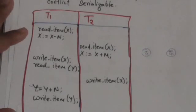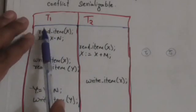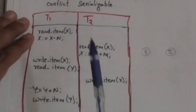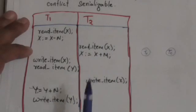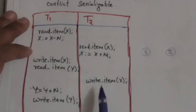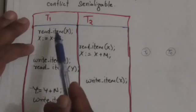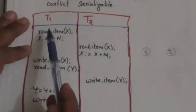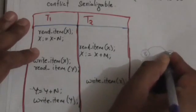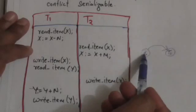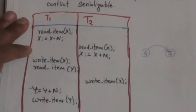Now see this read item X operation of T1, and this write item X operation of T2. Transaction T2 performs write item X after T1 performs read item X. So we will draw an edge from node labeled T1 to node labeled T2.